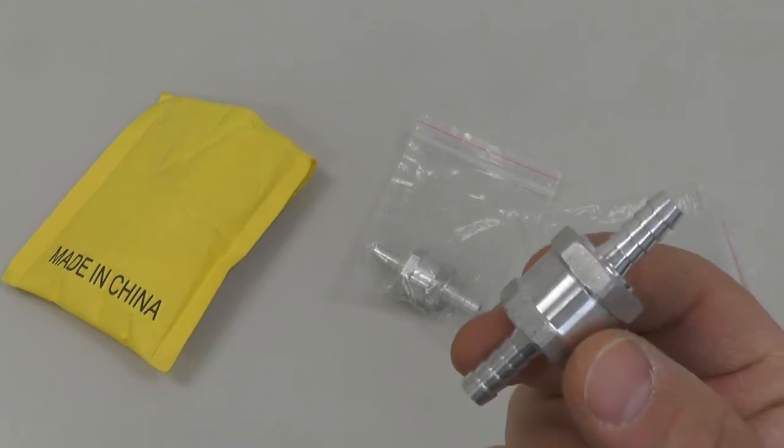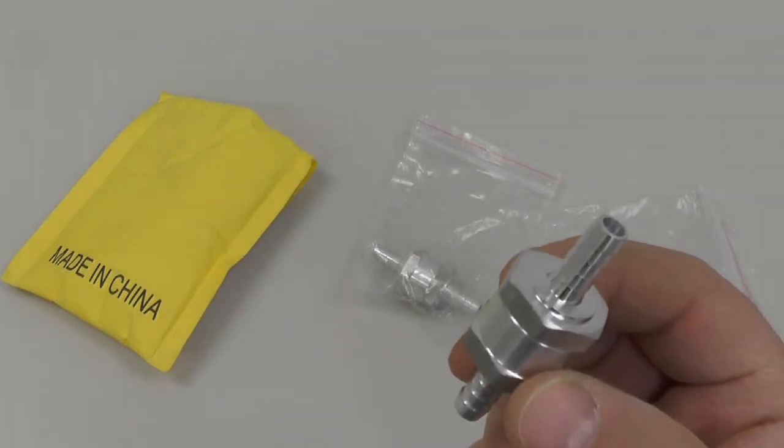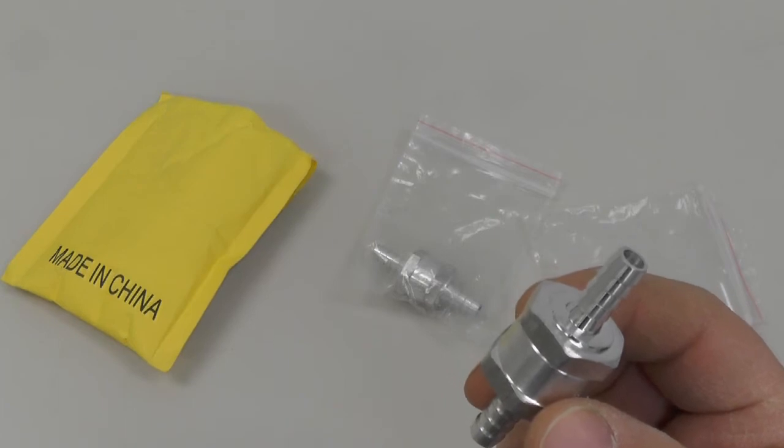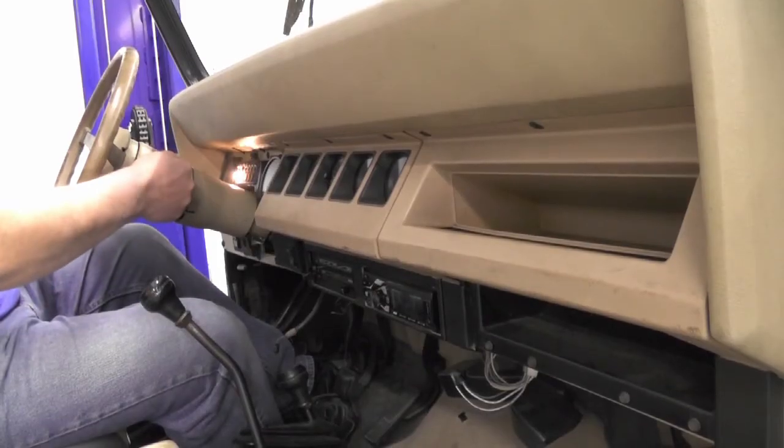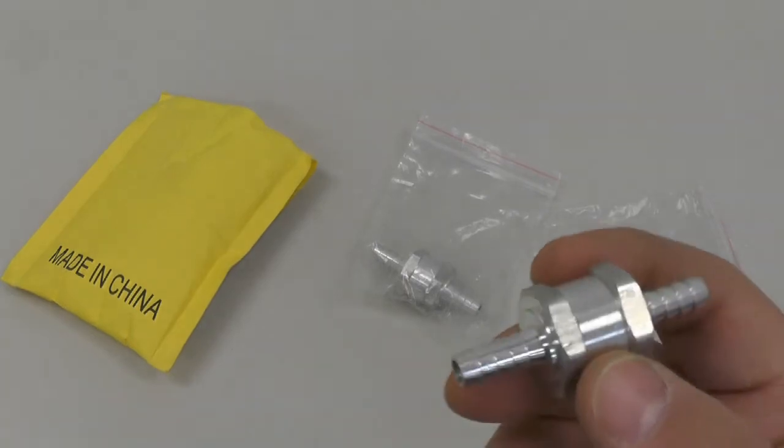91, 92 Jeep YJ when you cycle the key, the fuel pump only comes on for about one second which isn't enough time to prime the fuel line.